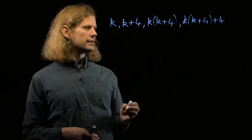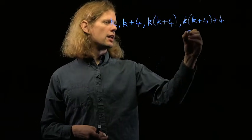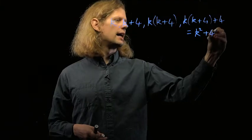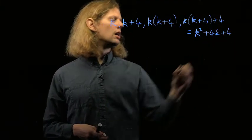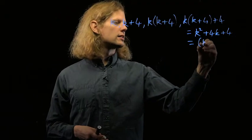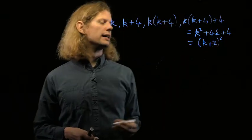This has got a bit complicated, and I can simplify it a bit. I get that this is equal to k squared plus 4k plus 4. And, happily, that factorizes as a square: it's (k+2), all squared.